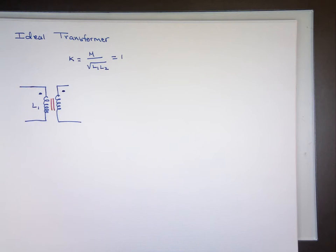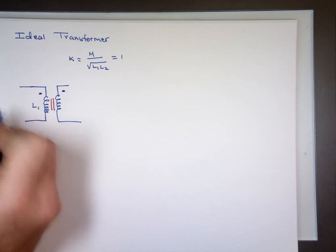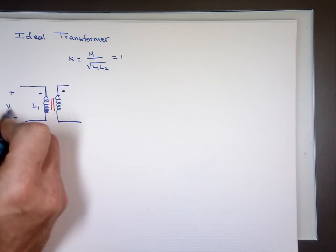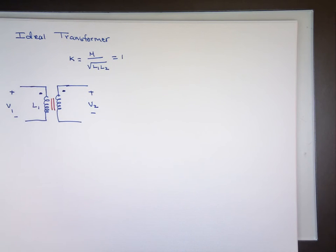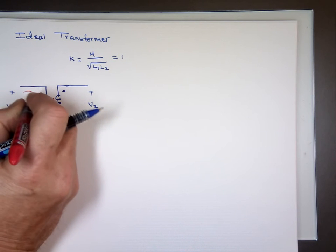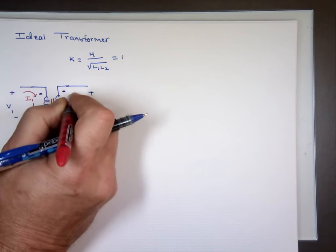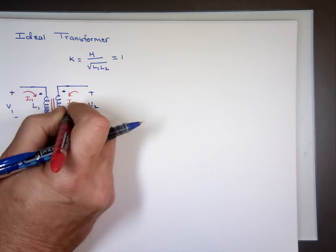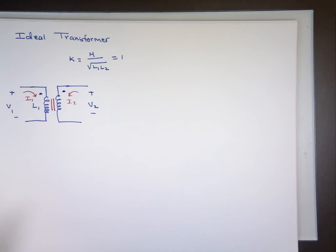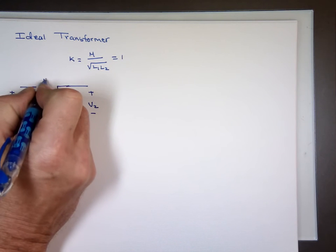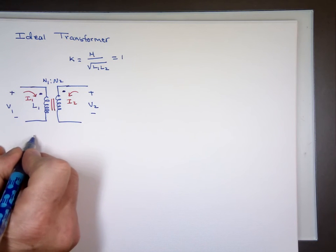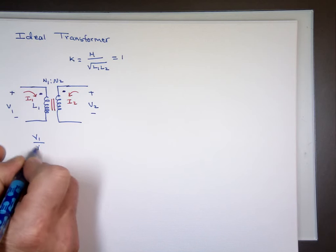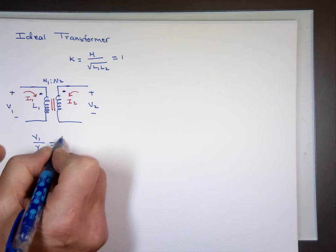Once you see those lines, that's the assumption you have an ideal transformer. If you don't have them, you have to know the mutual inductance. Now we have V1 and V2. If I have I-sub-1 entering this way and I-sub-2 entering this way, they're both entering the dot. The ratio of the number of turns N1 to N2 — the ratio of V1 to V2 is the same as N2 to N1.